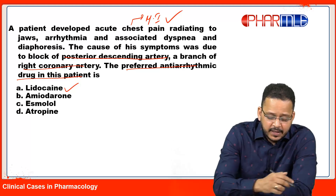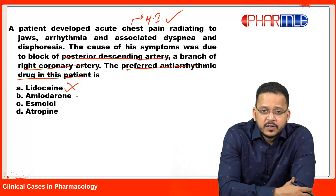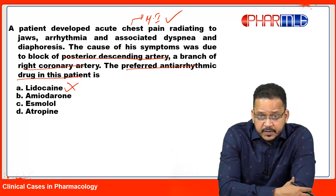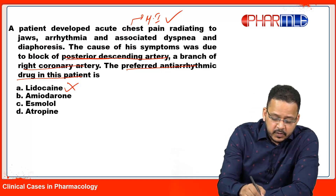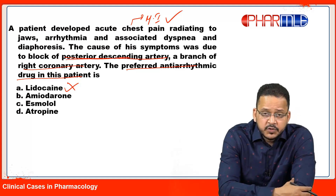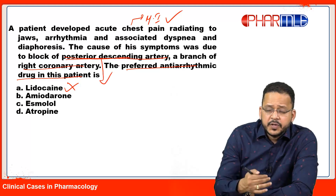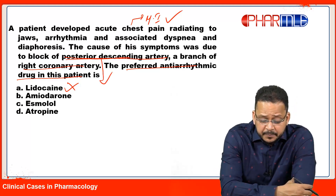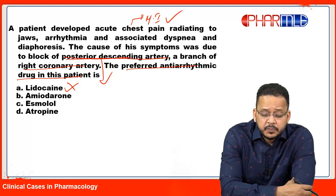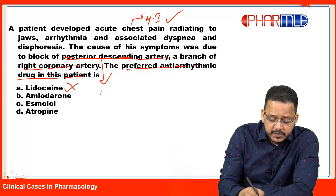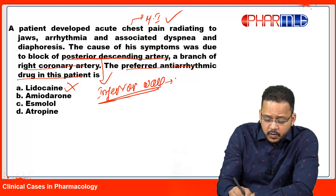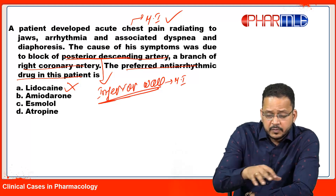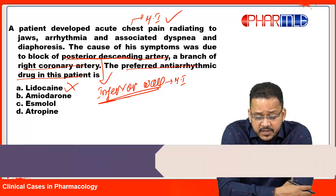But is lidocaine the answer this time? No, it is not. In this case, once you have diagnosed MI, you have to find out which wall of the left ventricle is affected. The blocked vessel is the posterior descending artery, a branch of the right coronary artery. You need to find out which wall of the heart the left ventricle's inferior wall is supplied by. The posterior descending artery, branch of the right coronary artery, supplies the inferior wall of the heart — so this is a case of inferior wall MI.